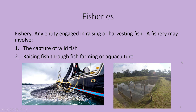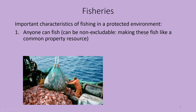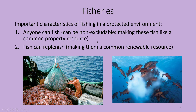Some important characteristics of fishing in the wild: anyone can fish — anybody with nets or a rod can go out and start catching fish, so we consider this industry non-excludable. These fish are a common property resource, as we discussed back in Chapter 4. But at the same time, these fish can replenish, making them not only a common resource but a common renewable resource. That replenishment might help us avoid tragedy of the commons problems, so long as we allow fish to replenish at a sustainable rate.